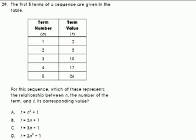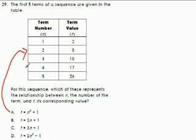The first problem says the first five terms of a sequence are given in the table. Which of these represents the relationship between n, the number of the term, and t, its corresponding value? All this is saying is which equation matches the input-output table. My suggestion is to take these values and plug them into the equations at the bottom to see which ones are true.